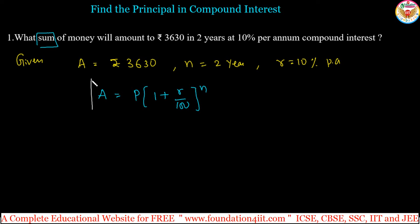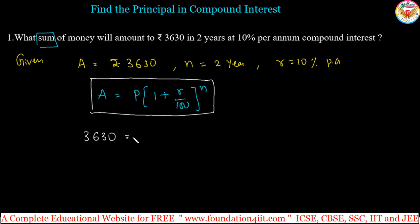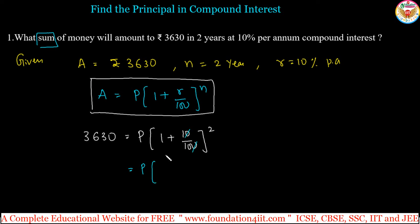In this formula we substitute the given values directly. Amount is 3630, equals P into (1 plus 10 by 100) to the power 2. Simplifying: 10 by 100 reduces, giving 1 plus 1 by 10, which is 11 by 10. So we get P into (11 by 10) whole squared, which equals 3630.